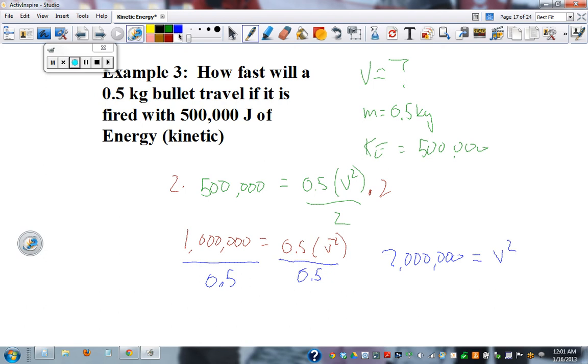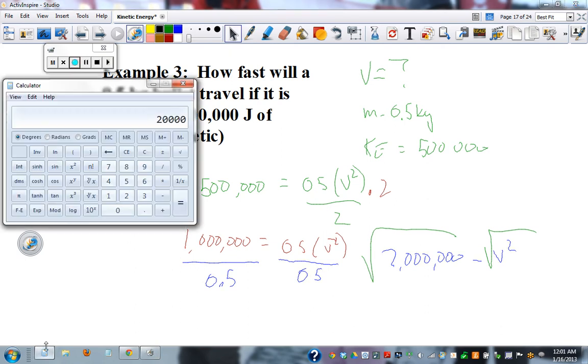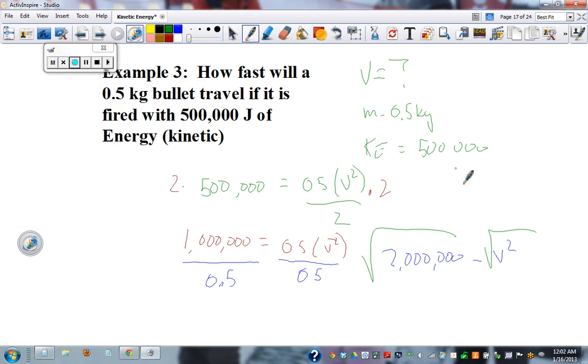Not done. Then we square root it. 2,000,000 squared, which one of these buttons? Here it is. 4,472 meters per second. Very fast. 4,472 meters per second.